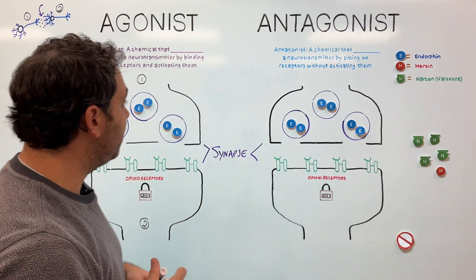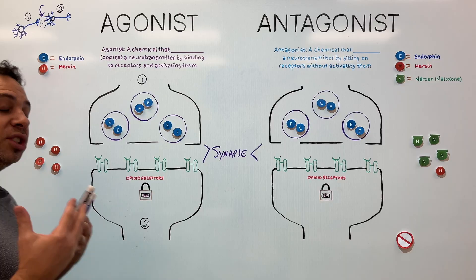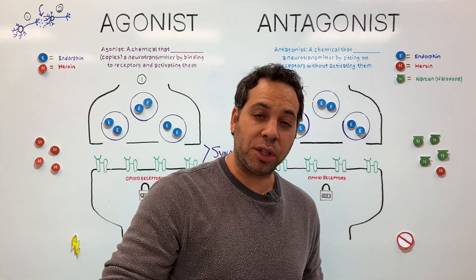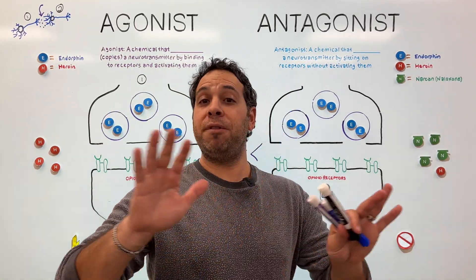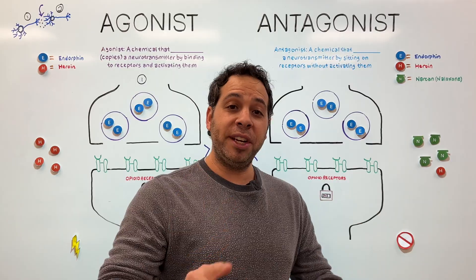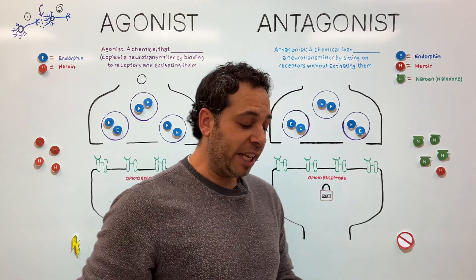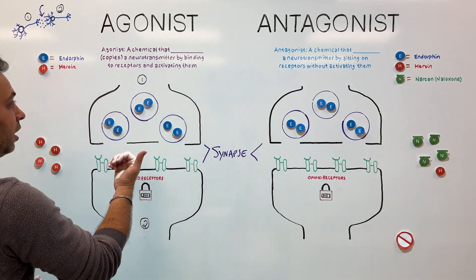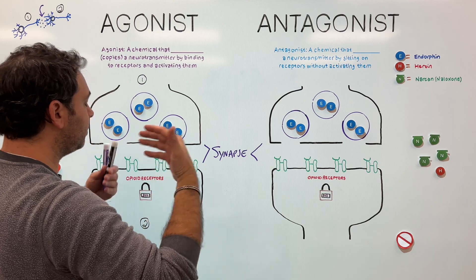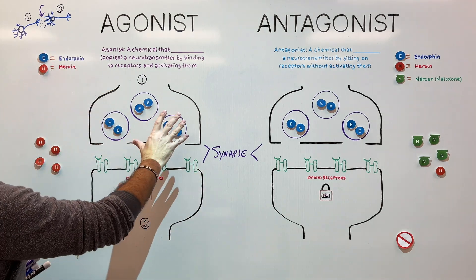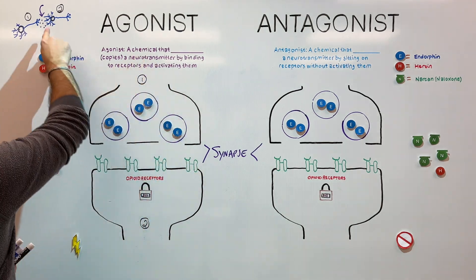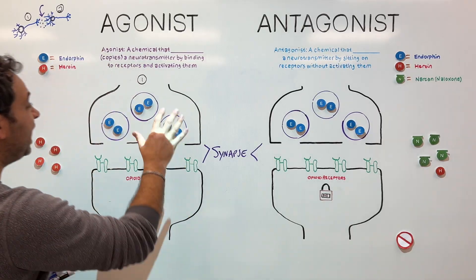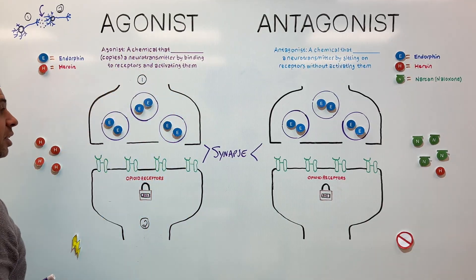Now how does a neuron fire and communicate? Well, it starts with an electrical charge called an action potential. We go very deep into this process in another video — I'll put the link up there. But we're going to have this charge travel down the neuron, with all the sodium entering, and it's going to hit the end of the neuron — right here — called the axon terminal, and it stores all those chemical messages.